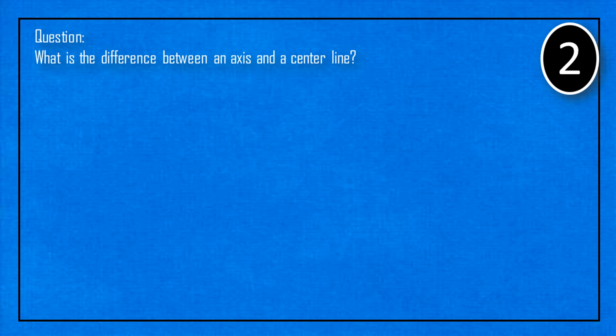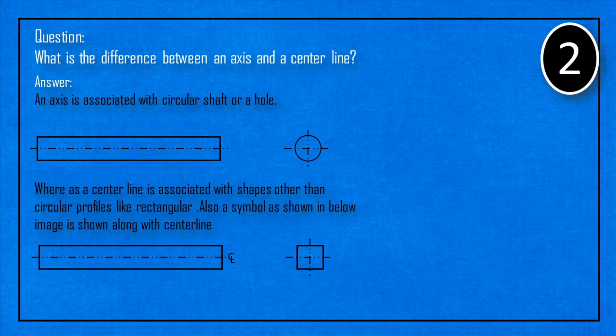What is the difference between an axis and a center line? An axis is associated with a circular shaft or a hole. Whereas a center line is associated with shapes other than circular profiles like rectangular. Also, a symbol as shown in below image is shown along with center line.